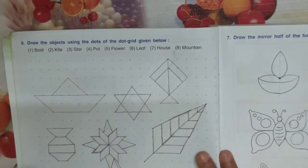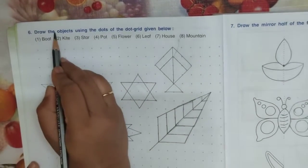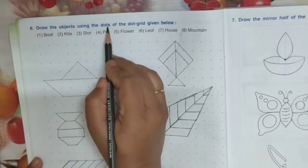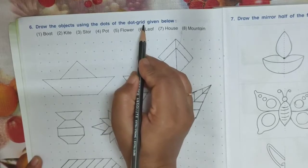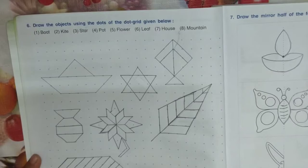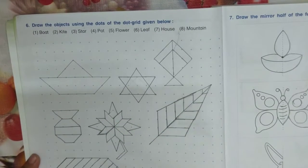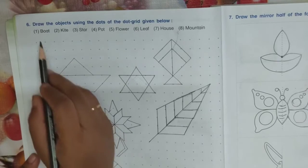Now see the next question number 6: draw the objects using the dots of the dot grid given below. See here, dots are given. In your book, dots are given and only one object is drawn. First one, boat is there.